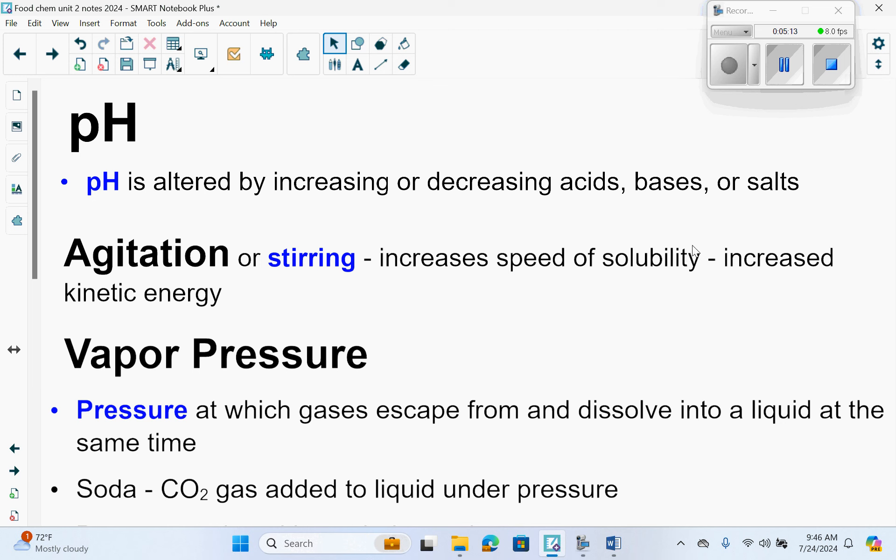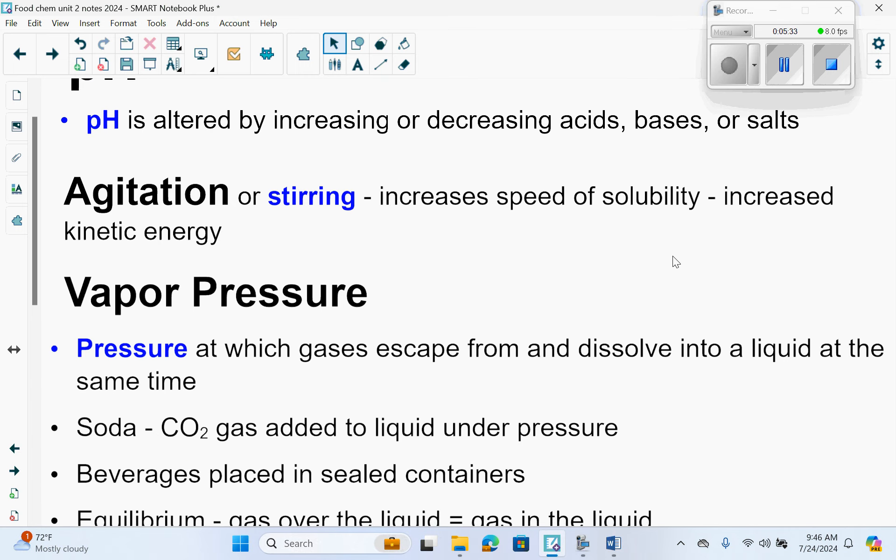pH is usually referring to acid-base. pH is altered by increasing or decreasing acids, bases, or salts. Agitation, or stirring, increases the speed of solubility, which increases the kinetic energy.